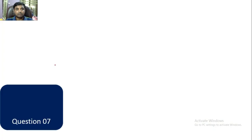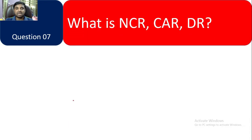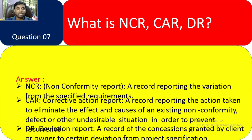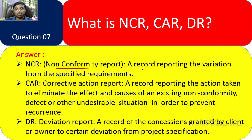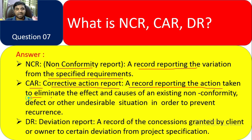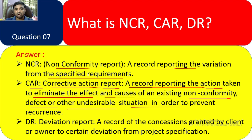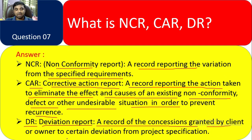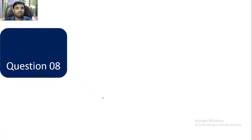Question 7: What is NCR, CAR, and DR? NCR is Non-Conformity Report — a record reporting variation from the specified requirement. CAR is Corrective Action Report — a record reporting the action taken to eliminate the effect and cause of an existing non-conformity or undesirable situation to prevent recurrence. DR is Deviation Report — a record of the concession granted by the client or owner to start a deviation from specification.